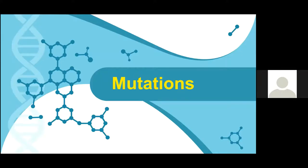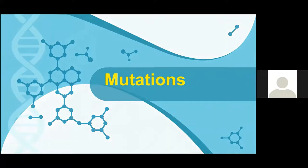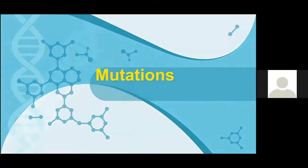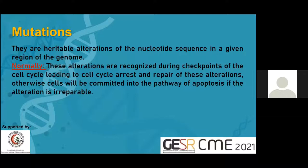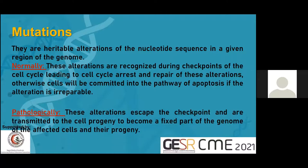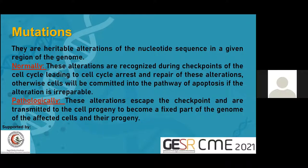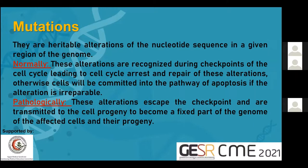Let's take an idea about mutations. Mutations are heritable alterations of the nucleotide sequence in a given region of the gene. Normally, these alterations are recognized during the checkpoints of the cell cycle, leading to cell cycle arrest and repair. Otherwise, cells will be committed into the pathway of apoptosis if the alteration is irreparable. But pathologically, these alterations escape the checkpoint and are transmitted to the cell progeny to become a fixed part of the genome of the affected cells and their progeny.